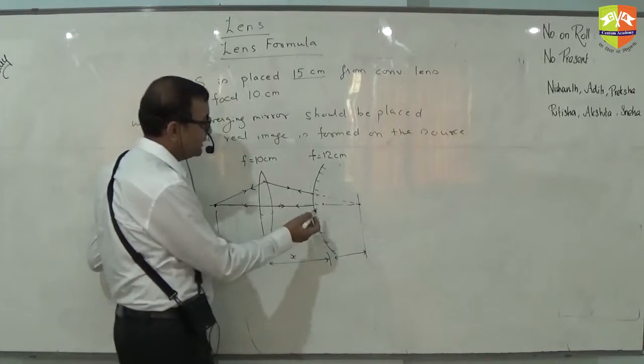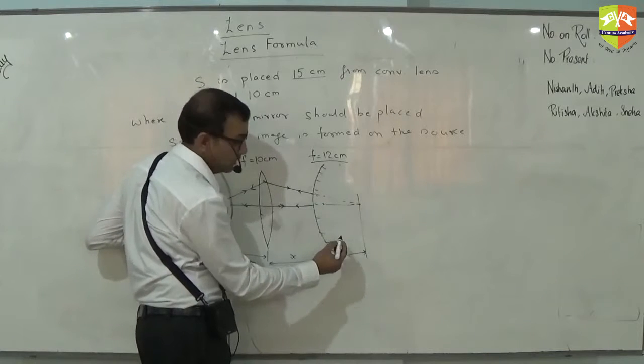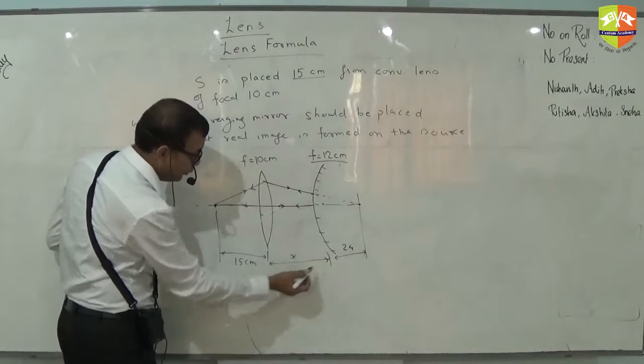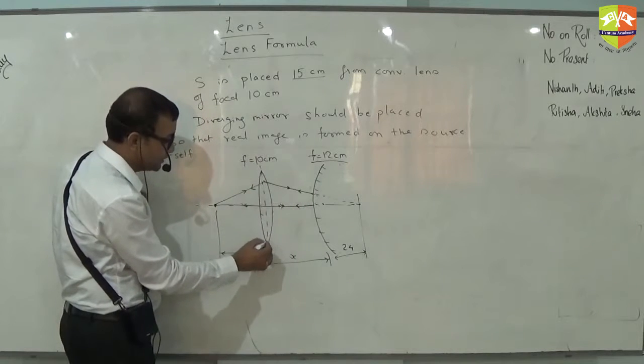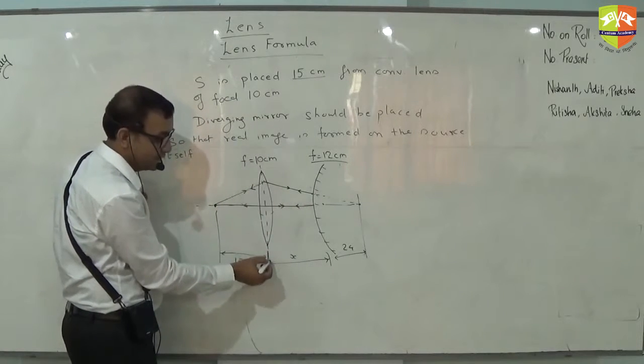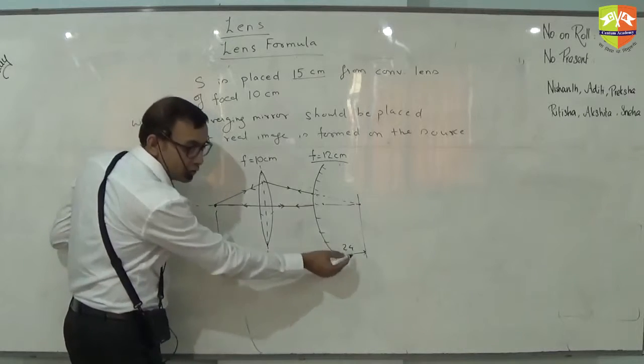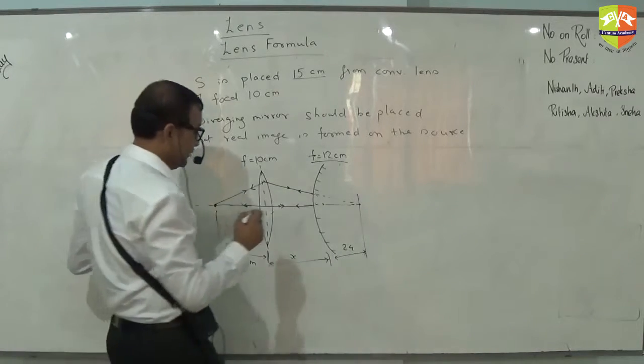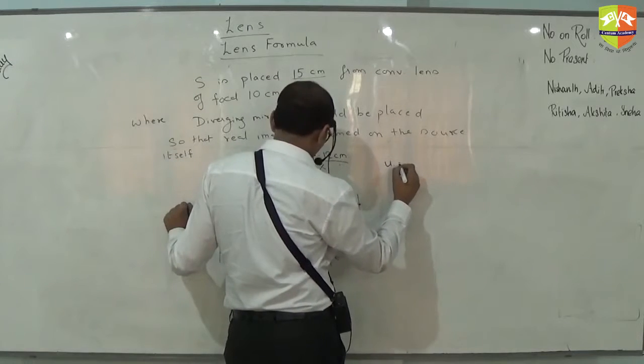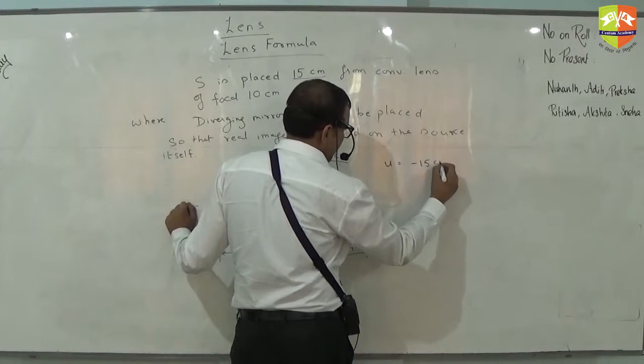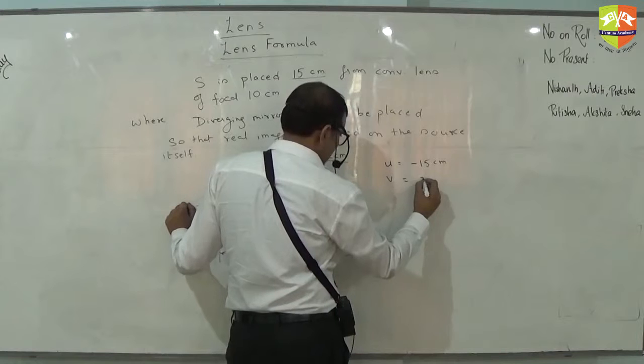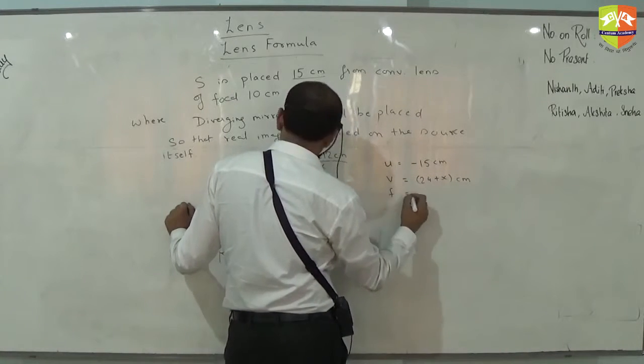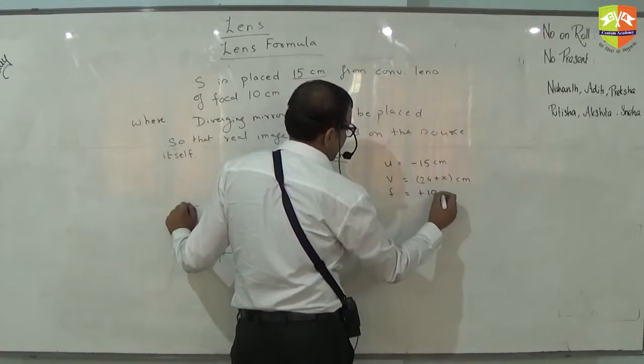What is the radius of curvature if focal length is 12? 24, so this should be 24. So if this is 24, the distance of image for the lens will be x plus 24. So we have the situation where u is minus 15 centimeter, v is 24 plus x centimeter, and f is plus 10 centimeter.